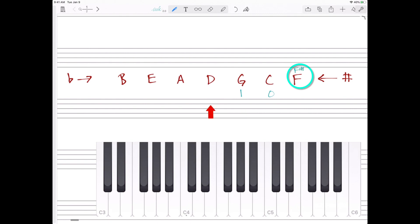The key of D also has F sharp. It has two sharps though, and the next sharp is C sharp. The key of A has three sharps: F sharp, C sharp, but also G sharp.